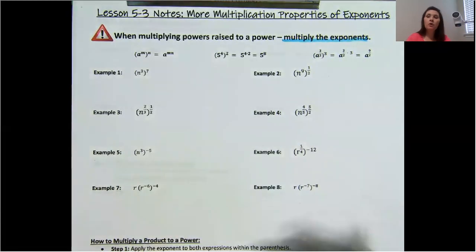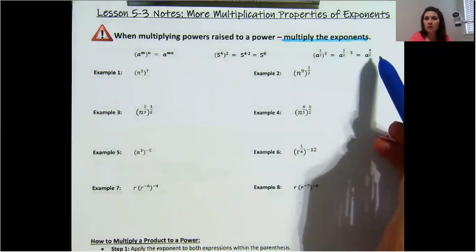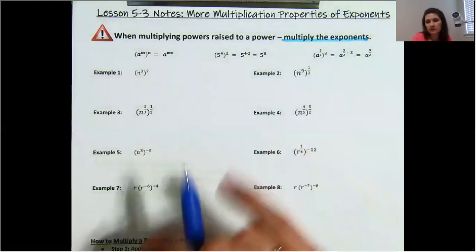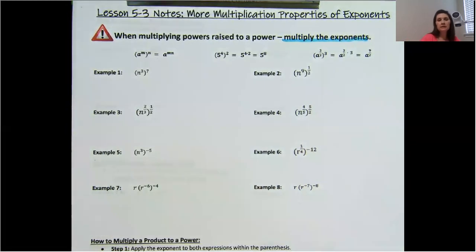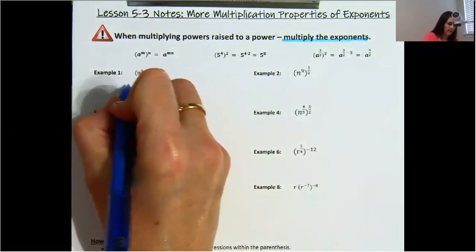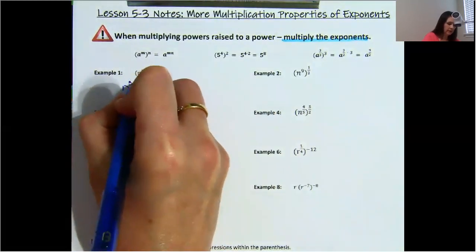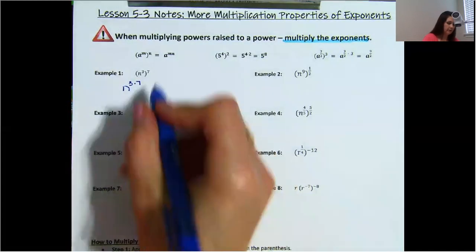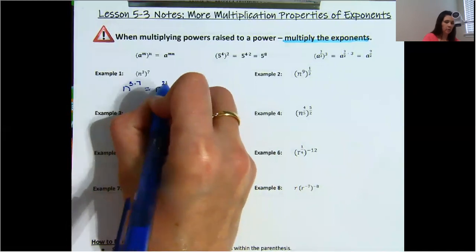I want you all to leave your fractions as improper, like we have been doing. Please don't change any of your exponents to decimals or mixed numbers. So let's get started with example 1. We have n to the power of 3 times 7, since it's raised to the power of 7, and that would give us n to the power of 21.